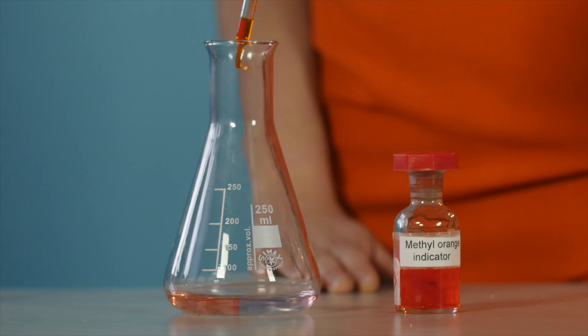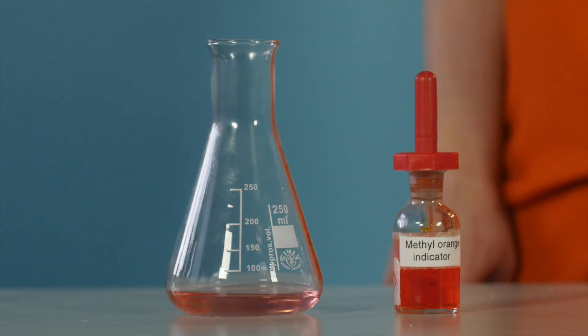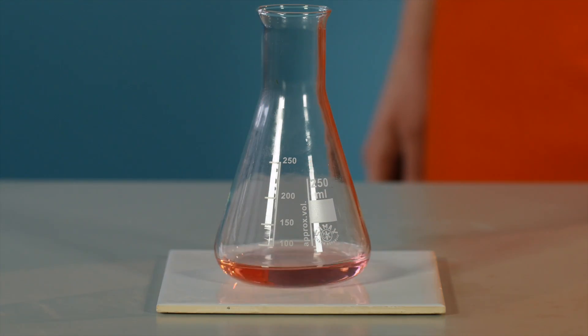Add two to three drops of methyl orange indicator to the flask. Take note of the colour of the solution, placing a white tile underneath the conical flask to make the colour more obvious.